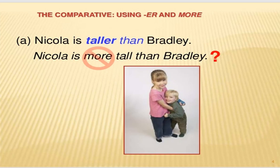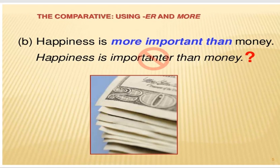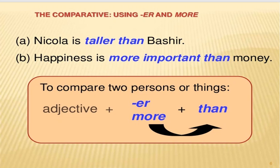We can't say 'Nikola is more tall' — burada 'more tall' deyə bilmərik, çünki 'tall' tək hecalıdır, ona görə -er şəkilçisi əlavə olunur. More yalnız çox hecalı sifətlərdə lazımdır. Məsələn, happiness is more important than money. We can't say 'happiness is importanter.' If it is two syllables, we have to say 'more important.' Nikola is taller than Bashir. Happiness is more important than money.